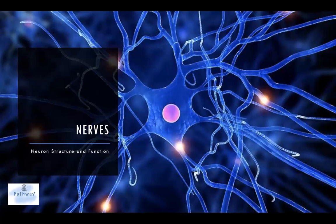Next we are going to talk about nerves — as in neuron structures and function. Not the same kind of nerves as in 'you're getting on my nerves.' When we talk about nerves, we have to talk about the basic fundamental units of the nerves, which are the neurons.